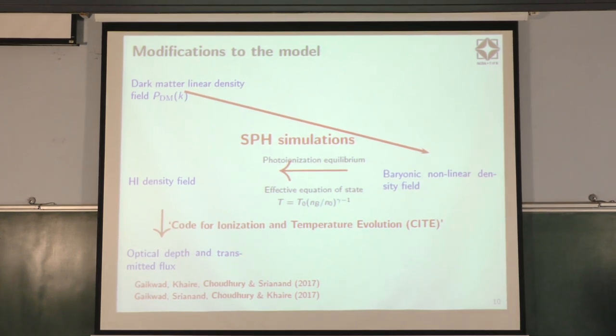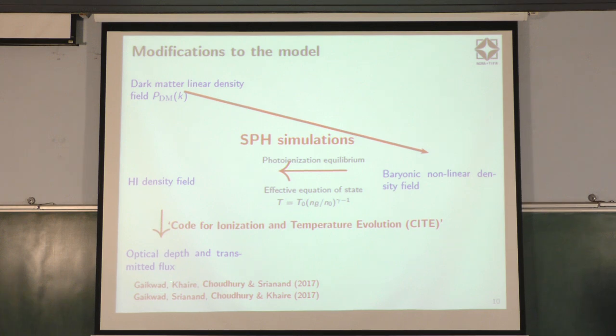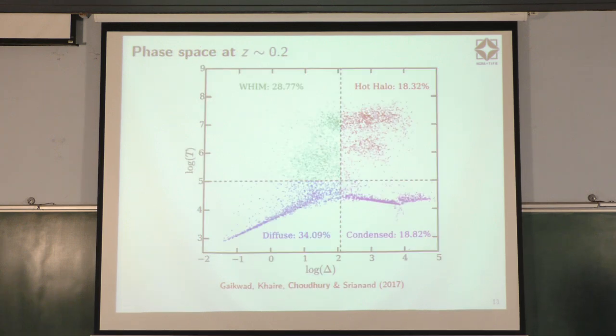You then still have to model the photo ionization and also the temperature to go to the H1. If you are running simulations, you can even evolve the temperature equations if you want. For example, this is some work which we were doing in the group here. This is Prakash Gaikwar, one of the students working with Sriana and me and Vikram who was Sriana's student. We developed a kind of temperature evolution module called SITE, which actually helped us in calculating the temperature and also the chemistry of the species. From there on we went to the optical depth and transmitted flux. Once we have this, what is the advantage of using simulations?